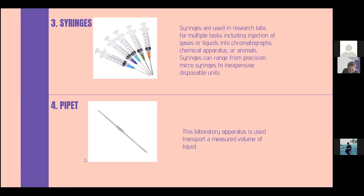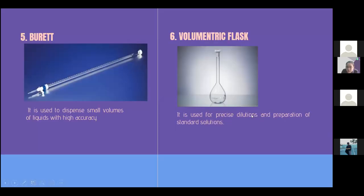Thank you Chris. Good morning everyone. For the next one is the burette. It is used to dispense small volumes of liquids with high accuracy. Burette is an essential laboratory instrument commonly used in the titration process for quantitative analysis in many industrial chemical tests where solutions of known concentration are used to find the concentration of unknown solution. For the next one is the volumetric flask. It is used for precise solution and precise dilutions and preparation of standard solution. A volumetric flask is a piece of laboratory apparatus, a type of laboratory flask calibrated to contain a precise volume at a certain temperature.